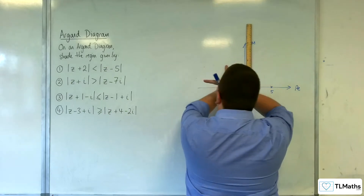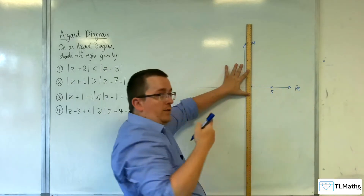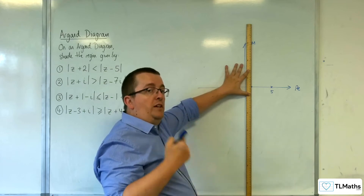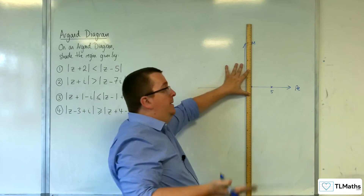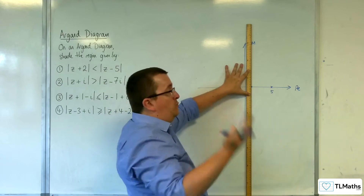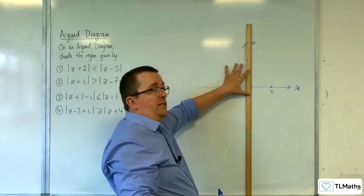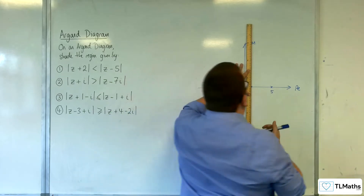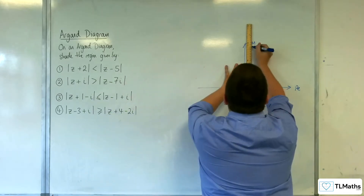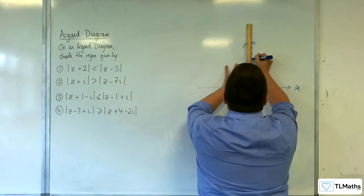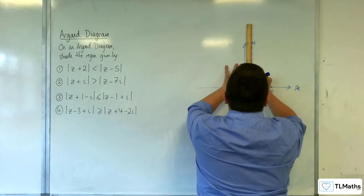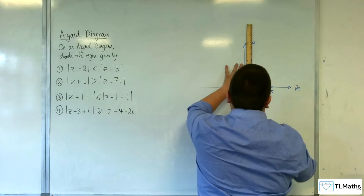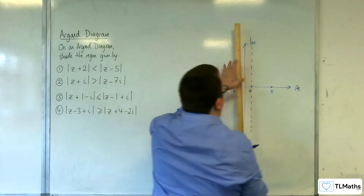Now, because we've got less than — a strict inequality like less than or greater than — we're going to use a dotted line. Less than or equal to or greater than or equal to, it's a solid line because we're including the points. So this will be a dotted line.